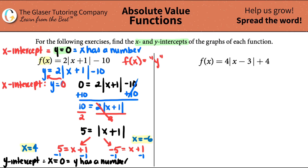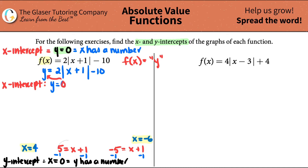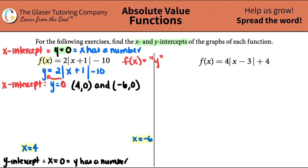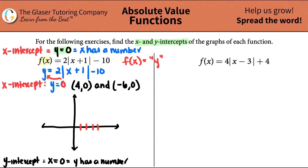So the x-intercepts in coordinate notation would be (4, 0) and (−6, 0), because the y-values have to equal 0. Those are your two x-intercepts. If I drew a graph, I'd mark an intercept at x equals 4 and another at x equals negative 6 — that's where your graph crosses the x-axis. It's always going to have that v-shape.